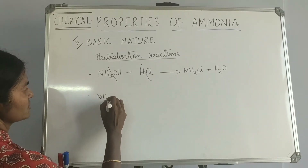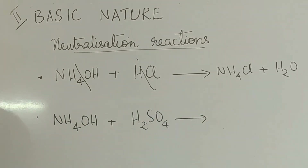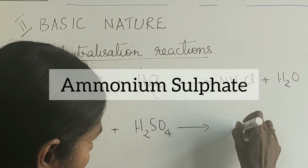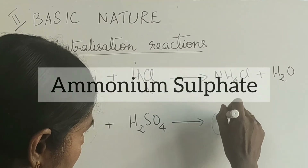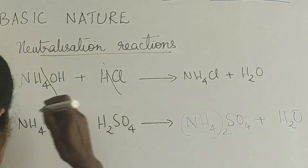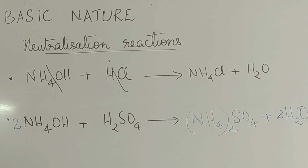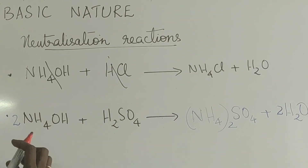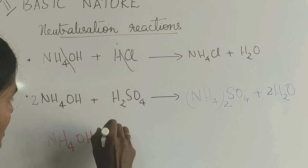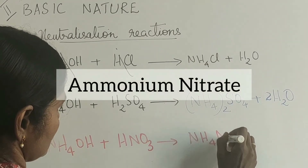Ammonium hydroxide also reacts with sulfuric acid to give ammonium sulfate plus water. The third reaction: ammonium hydroxide reacts with nitric acid to give ammonium nitrate plus water.